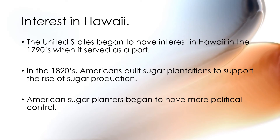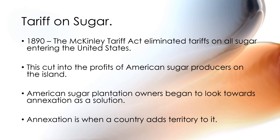The United States began to have interest in Hawaii in the 1790s when it served as a port. In the 1820s, Americans built sugar plantations to support the rise of sugar production on the islands. American sugar planters began to have more political control. In 1890, the McKinley Tariff Act eliminated tariffs on all sugar entering the United States.